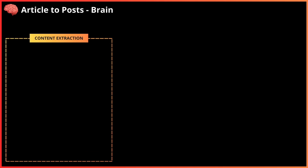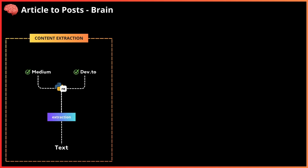Content extraction. For the first version of this extension, I narrowed the supported blocks to Medium and dev.to. I used the regex Python library to define in which domain the content generation is called. Then for dev.to, I used BeautifulSoup to extract text. For Medium, I couldn't scrape the content with this library, so I used the Medium Rapid API to extract the content.